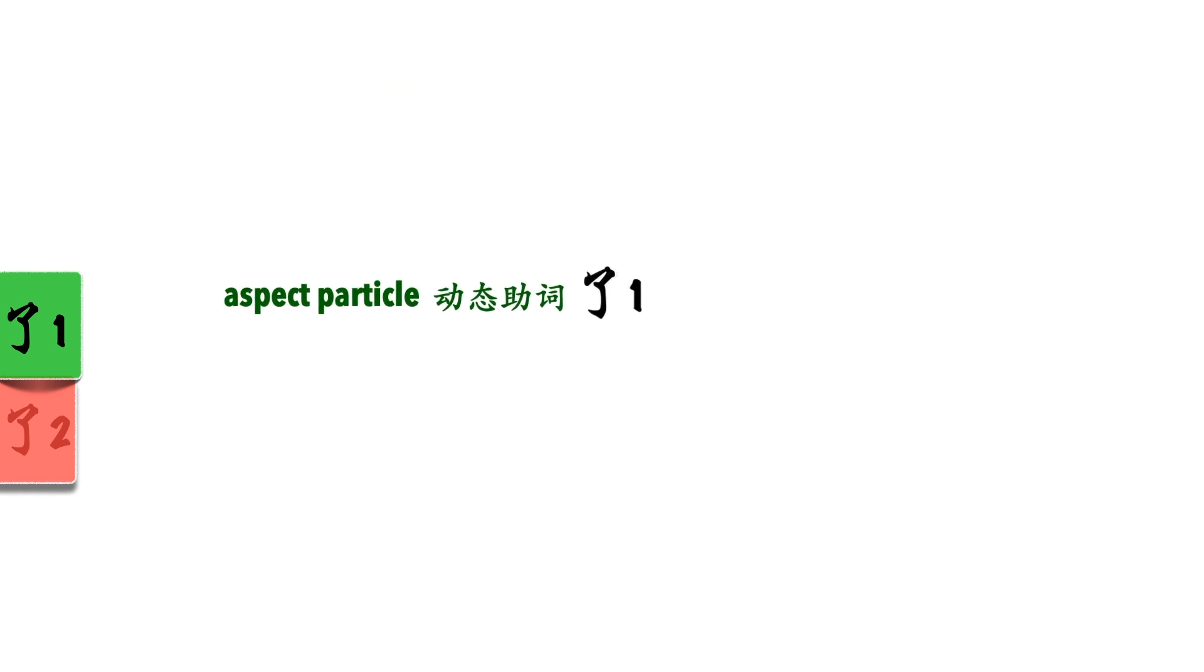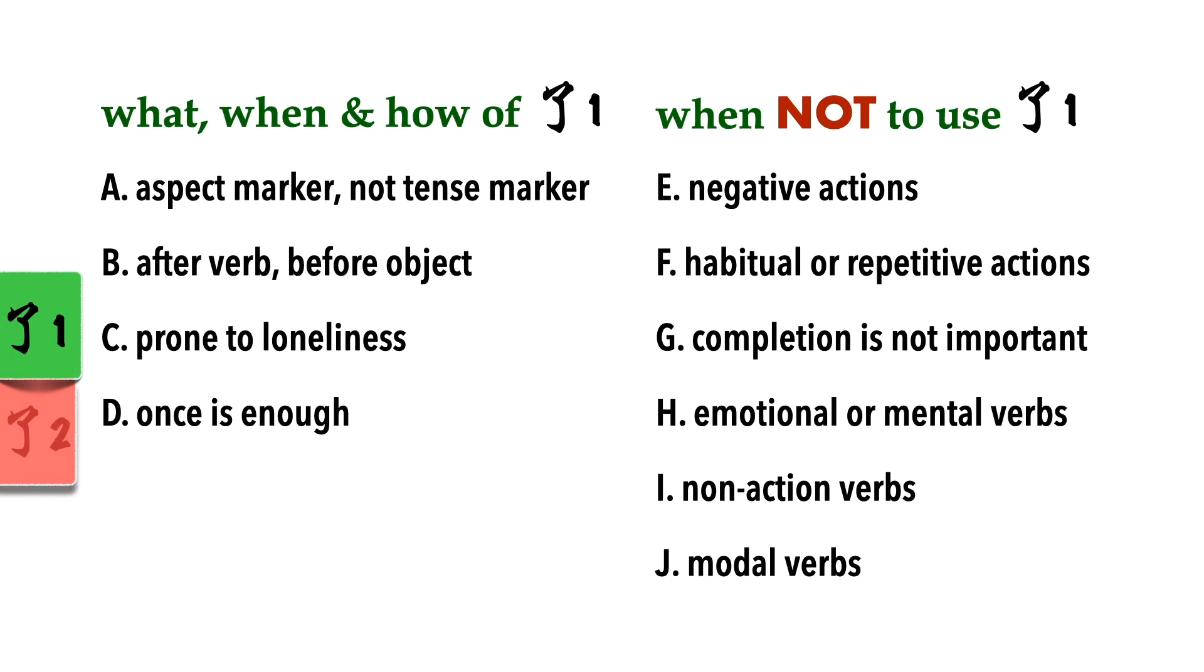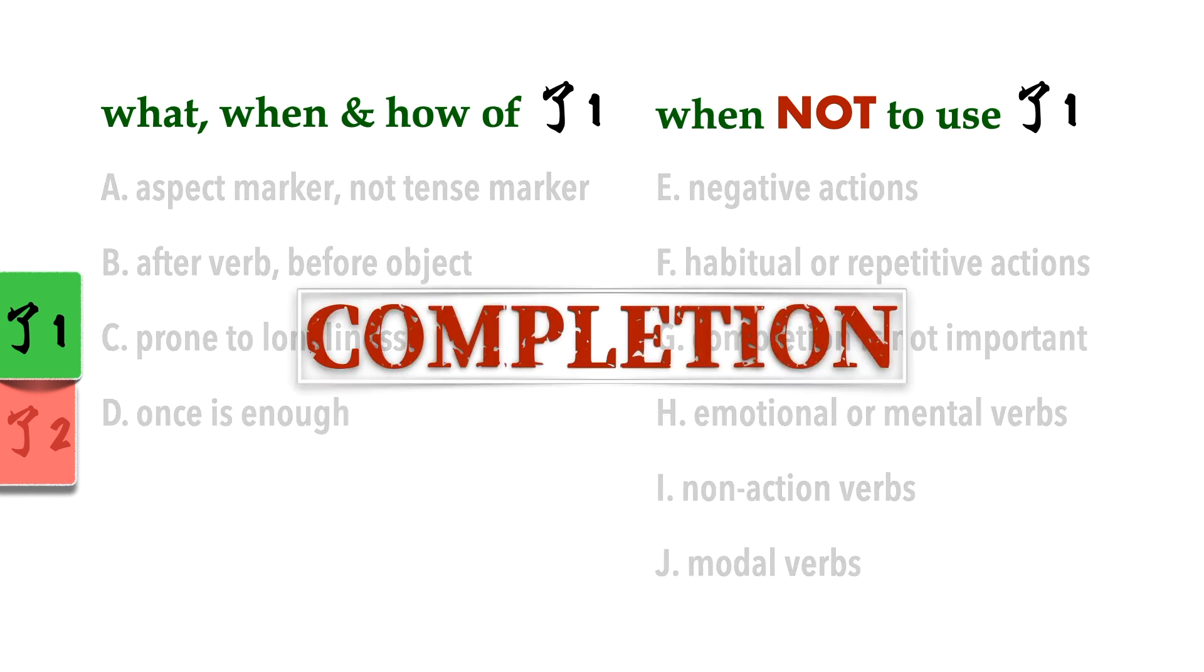This might be hard to understand but it will get clearer as we go through the explanation and examples. In case you're wondering, other aspect particles include 过 and 着. Let's look at the traits of 勒1. They're quite a lot but the following are the more important ones and more than enough to make you go crazy. Remember, there's still 勒2 after this. As you go through each of them, try to bear in mind the nature of 勒1, which is about completion. Gradually, you should be able to understand it better.